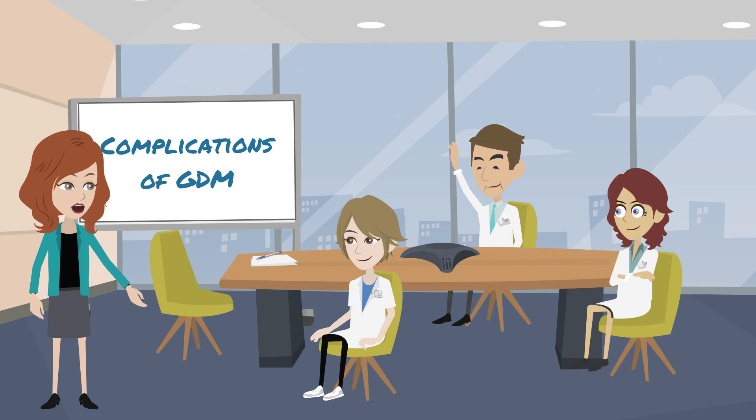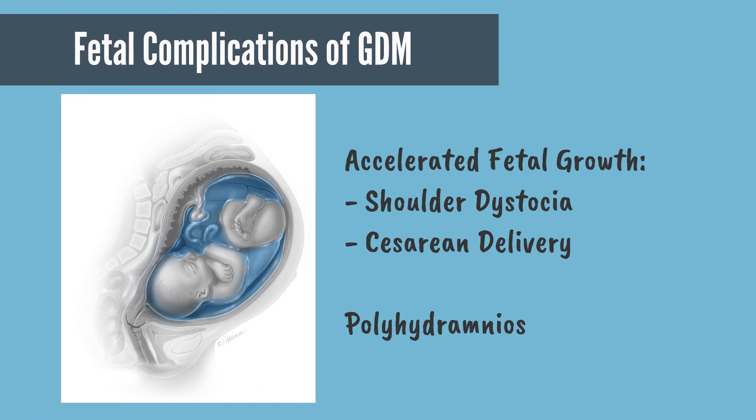It is important to discuss with patients the implications of poorly controlled gestational diabetes. For the fetus in utero, excessive glucose transport can result in excessive fetal insulin and fetal growth. Fetal fat preferentially increases at the shoulders and abdomen. The accelerated growth can place the fetus at risk for birth complications such as shoulder dystocia, fetal intolerance of labor, or caesarean delivery. There is also an increased risk of polyhydramnios, which can increase risk for preterm labor.